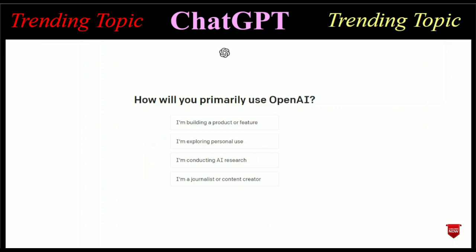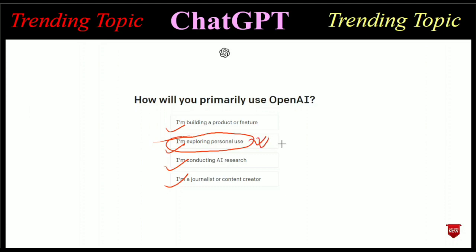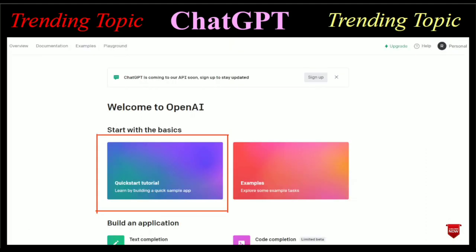After verifying the code you will be redirected to a new page where you have to choose one of the options: 'I am building a product,' 'I am exploring personal use,' 'I am conducting AI research,' or 'I am a journalist or content creator.' I have clicked 'I am exploring personal use.' After clicking, the new page will open showing your account.